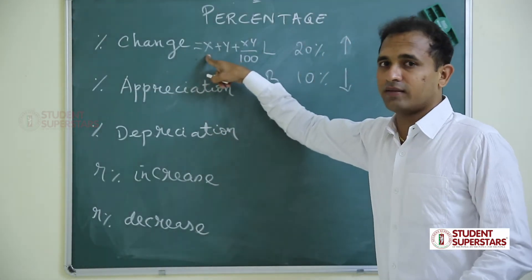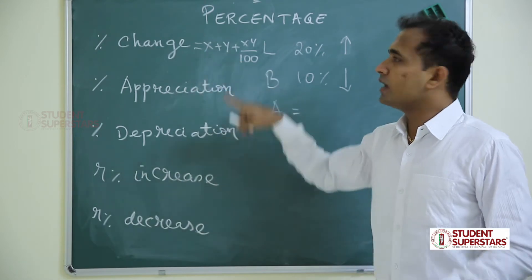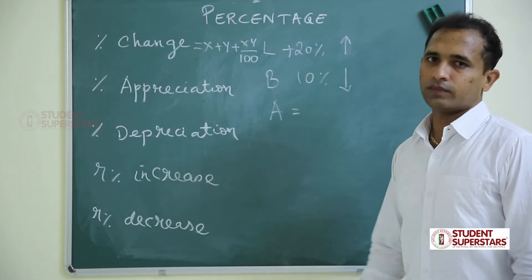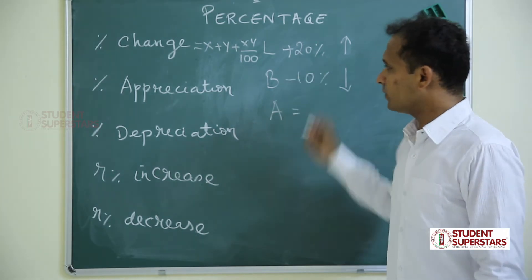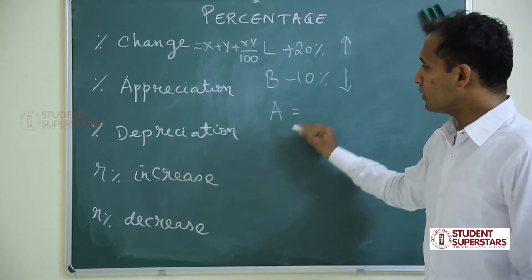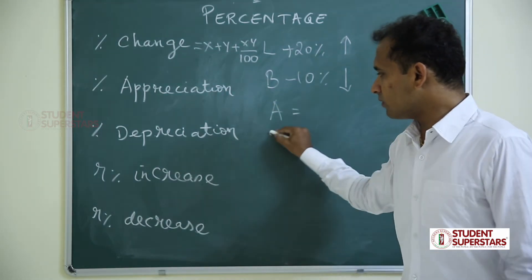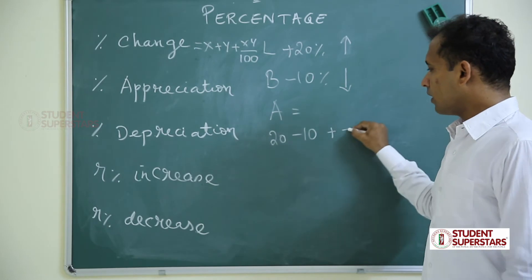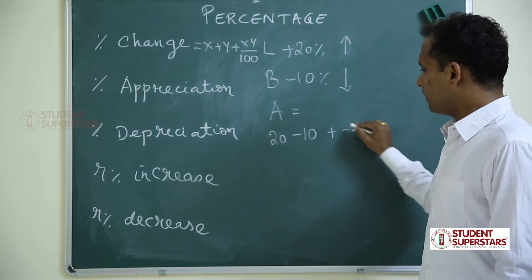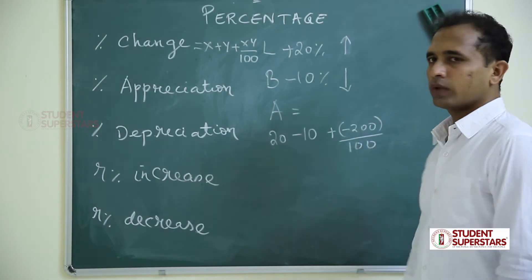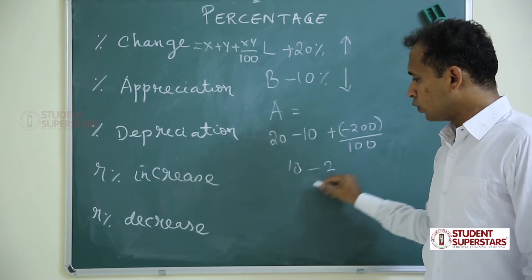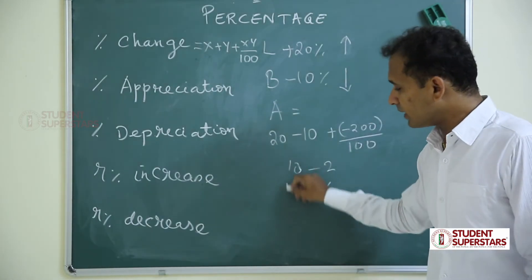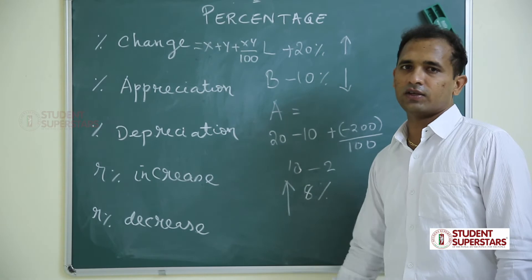Here x can be increase or decrease — if increase use plus, if decrease use minus, same for y. Here length increases by 20 so x = +20, breadth decreases by 10 so y = −10. Applying the formula: 20 + (−10) + (20 × −10)/100 = 10 − 2 = 8. The result is 8 percent, positive, so 8 percent increase.